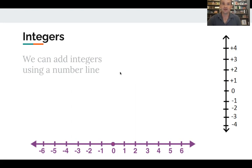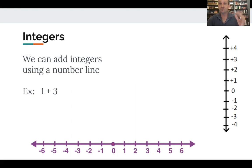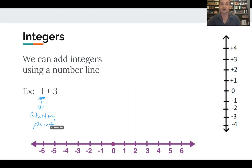Let's get started with adding integers. I'll give you a simple kindergarten example — one plus three — just to show how we add integers using a number line. The starting number is always our starting point in an addition problem. We start at number one, so I'm going to place a dot here at number one. Then for plus three, I'm going to move up the number line three spaces.